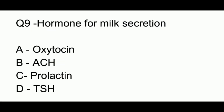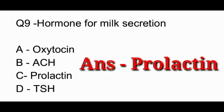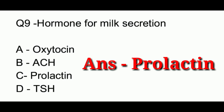Question number 9. The hormone for milk secretion is: option A, oxytocin; option B, ACH; option C, prolactin; option D, TSH. The answer to this question is option C, which is prolactin.